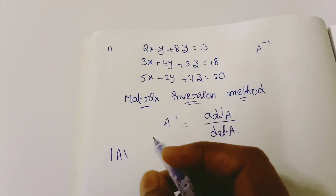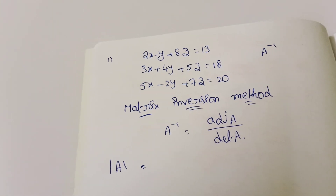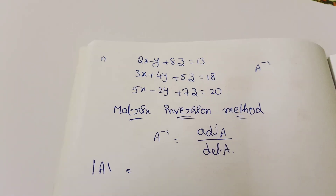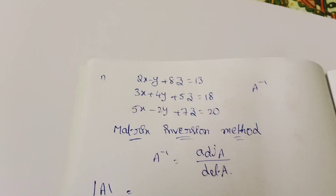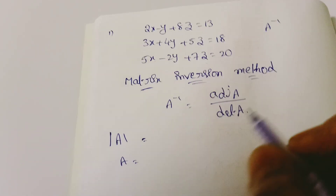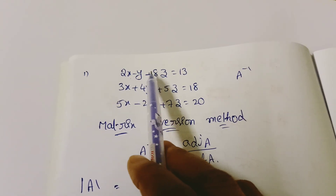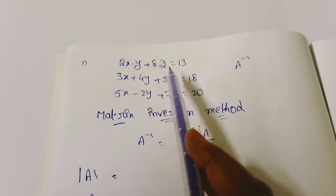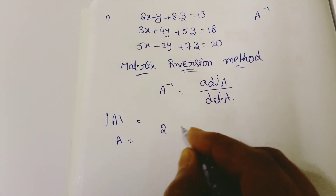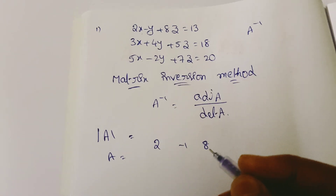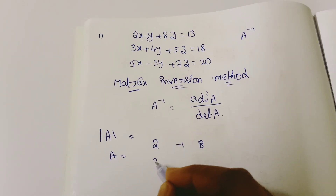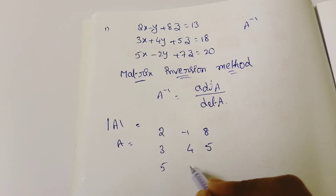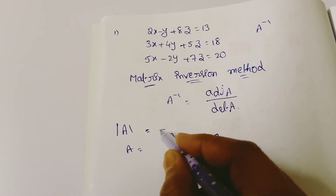Let's write the determinant. Matrix A is formed from the coefficients: row 1 is 2, minus 1, 8; row 2 is 3, 4, 5; row 3 is 5, minus 2, 7. These are the X, Y, Z coefficients.